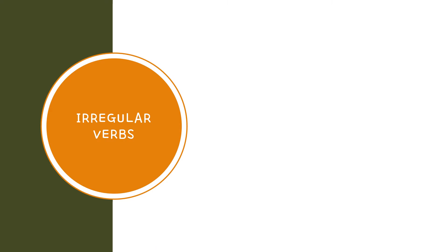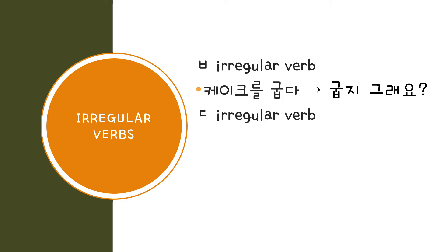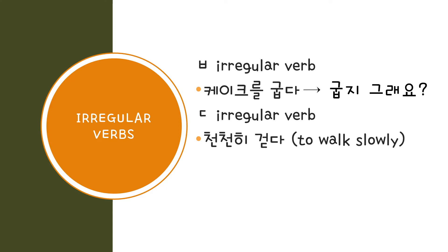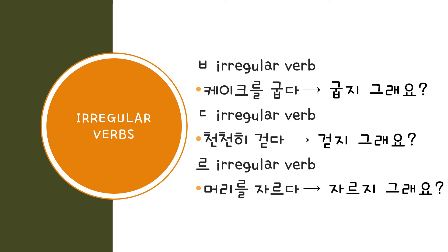Now let's look at some irregular verbs. Remember, there is no special rule for irregular verbs — you simply attach 지 그래요. First, a ㅂ irregular verb: 케이크를 굽다 becomes 케이크를 굽지 그래요. A ㄷ irregular verb like 천천히 걷다 becomes 천천히 걷지 그래요. A 르 irregular verb like 머리를 자르다 becomes 머리를 자르지 그래요.